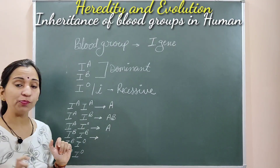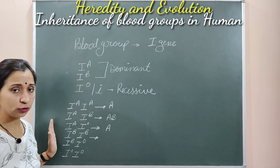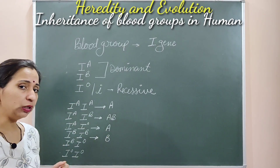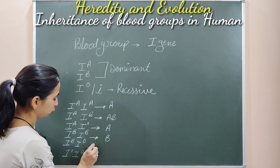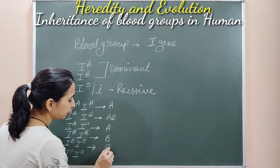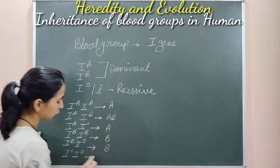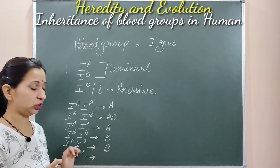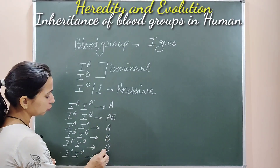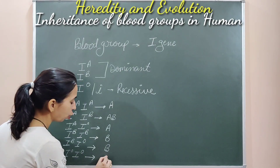Where Ib is present in homozygous dominant form (Ib-Ib), the blood group will be B. In the next condition where Ib comes with Io, the blood group will also be B because Ib is dominant and Io is recessive. And in the last condition where Io-Io (homozygous recessive) is present with no dominant alleles, the blood group will be O.